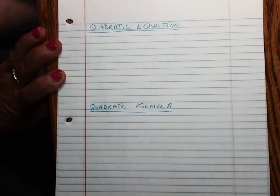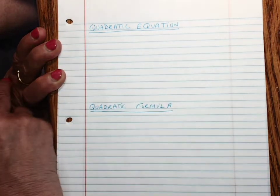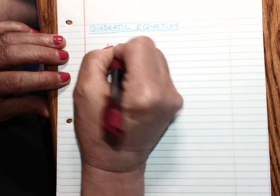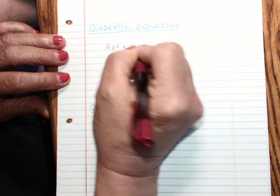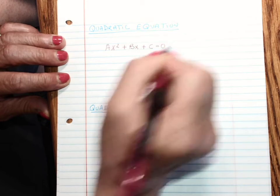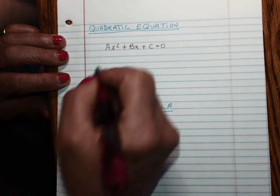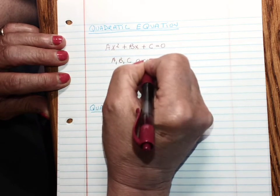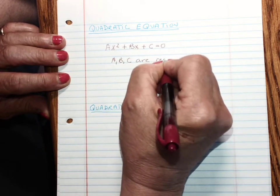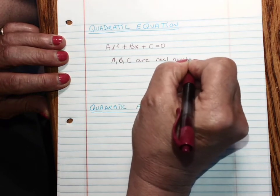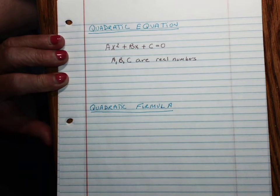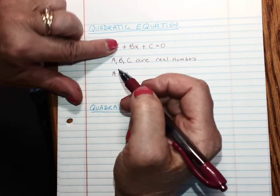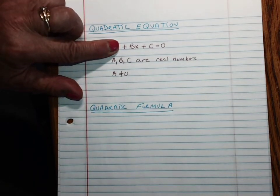And you already know the quadratic equation. The quadratic equation is ax squared plus bx plus c equals zero, where a, b, c are real numbers and a cannot equal zero because then it would be a linear equation.